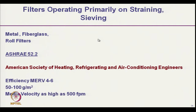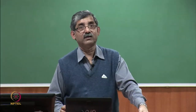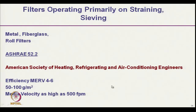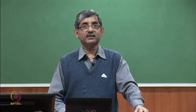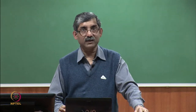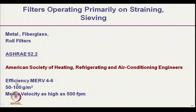Examples of straining-type filters include metal, fiberglass, and roll filters. As per ASHRAE Standard 52.5 — ASHRAE being the American Society of Heating, Refrigerating and Air Conditioning Engineers, which forms standards for filters — the efficiency for this straining-type filter is at MERV level 4 to 6.